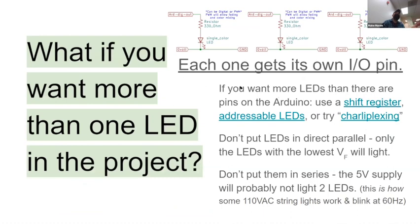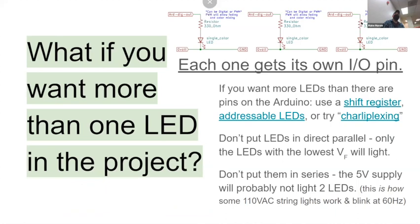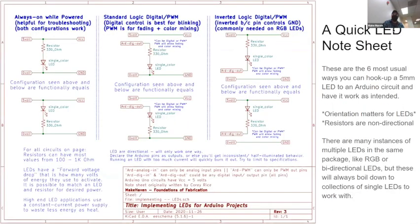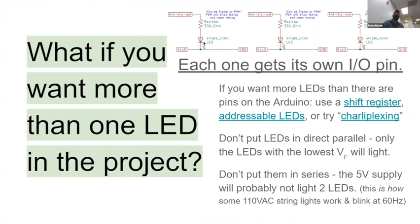If you want more than one LED in a project, you're basically going to need to recreate that circuit multiple times. If you want three different LEDs — say you're building a stoplight — you'd need a red, a yellow, and a green. You'd set up each LED on its own Arduino digital output pin with its own resistor tied back to ground. You just need to think about how many pins you have and how many lights you want — each one gets its own pin.